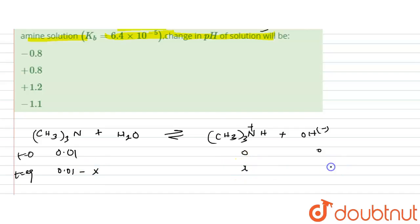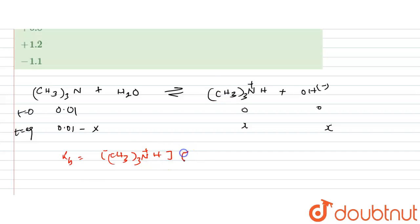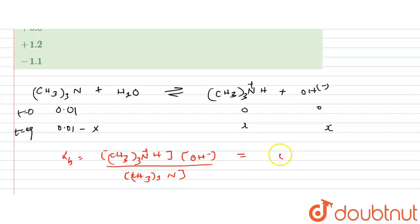Now let's write down the equilibrium constant expression. Kb equals the product of the concentrations of the products — [(CH₃)₃NH⁺] × [OH⁻] — divided by the concentration of the reactant [(CH₃)₃N]. From the ICE table, this gives Kb = x² / (0.01 − x).